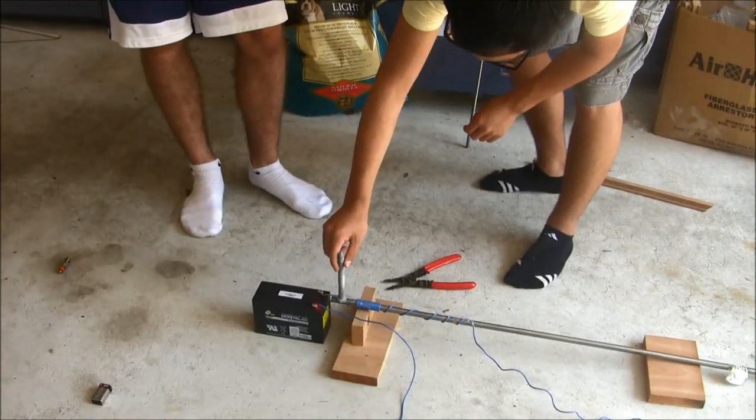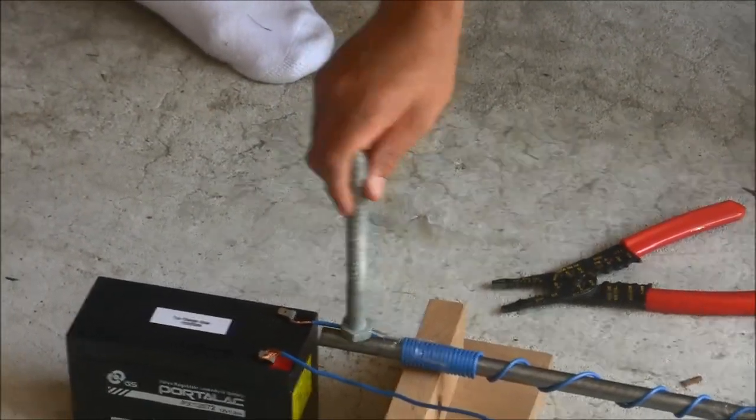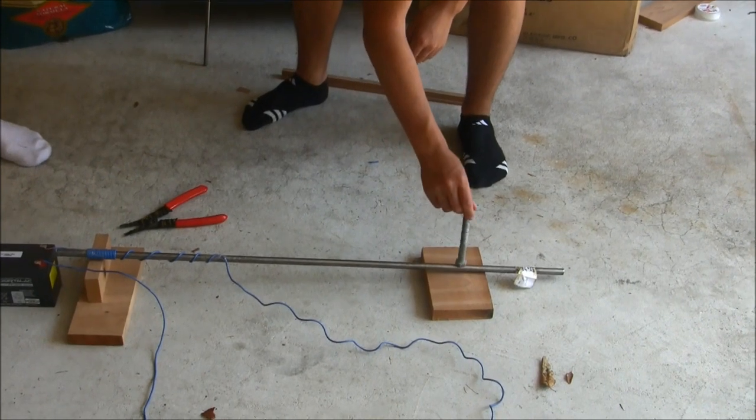You can also take this nail, which was staying on before, and it still stays on at the top, but you can see it is much less attracted to the magnet. And down here, it is not being attracted at all, it is just falling off.